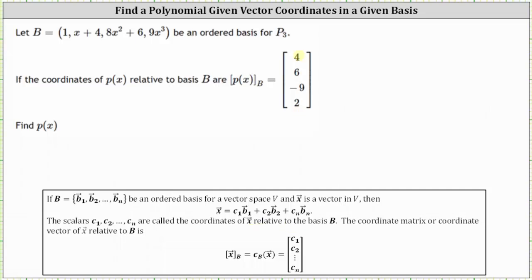In our case, the scalars are 4, 6, negative 9, 2. Therefore P(x) equals the first coordinate of 4 times the first polynomial in the ordered basis, which is 1, plus the second coordinate of 6 times the second polynomial of the basis, which is x plus 4,